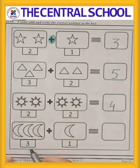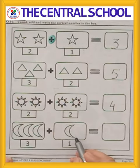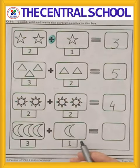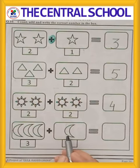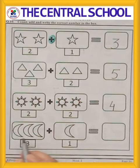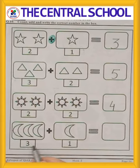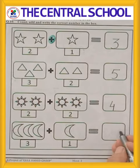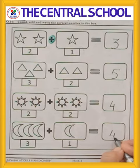Next one. Moon. 3 moons and 1 moon. Let's count. 1, 2, 3, 4. How many all together? 4. This means 3 plus 1 is equal to 4. So you have to write number 4 over there.